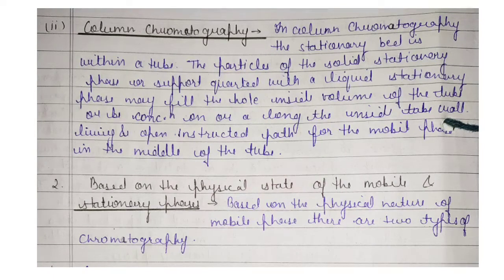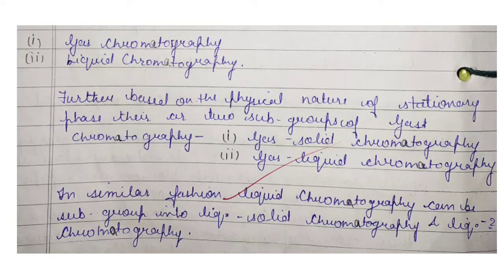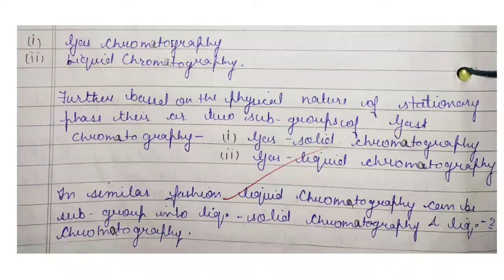The second classification is based on the physical state of the mobile phase and stationary phase. Based on the physical nature of the mobile phase, there are two types: first, gas chromatography; second, liquid chromatography. Further, based on the physical nature of the stationary phase, there are two subgroups of gas chromatography — gas-solid chromatography and gas-liquid chromatography. Similarly, liquid chromatography can be subgrouped into liquid-solid chromatography and liquid-liquid chromatography.